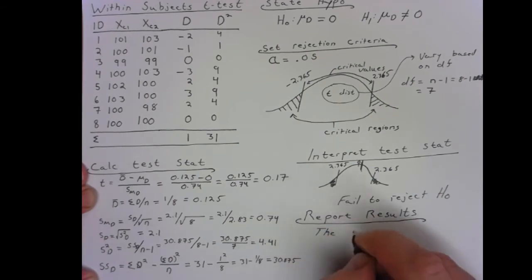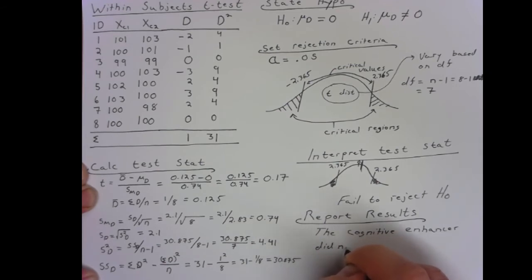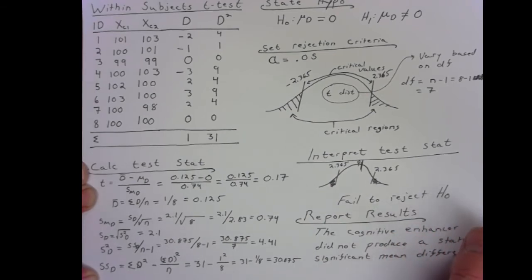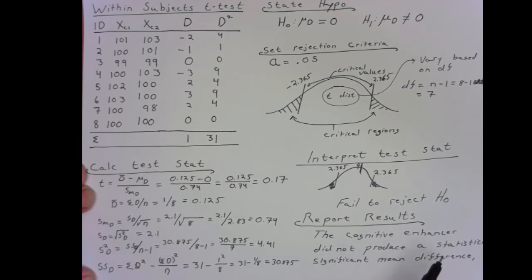In this case, it needs to be in the form of sentence. The cognitive enhancer did not produce a statistically significant mean difference. Note, when you write this out, the term statistically significant is essentially code for rejecting the null hypothesis. We are negating rejecting the null hypothesis. We're failing to reject. It means the same thing.